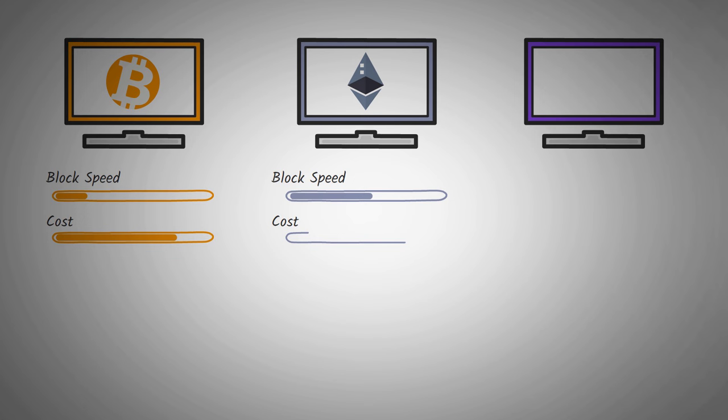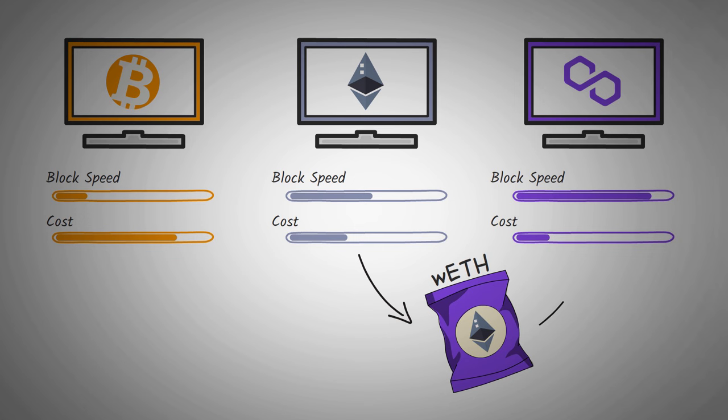Polygon is even faster than Ethereum, and the native coin is Matic. So many users use wrapped Ethereum, called WETH, on the Polygon blockchain to do things they would normally do on the Ethereum blockchain, but much quicker and with much lower fees.